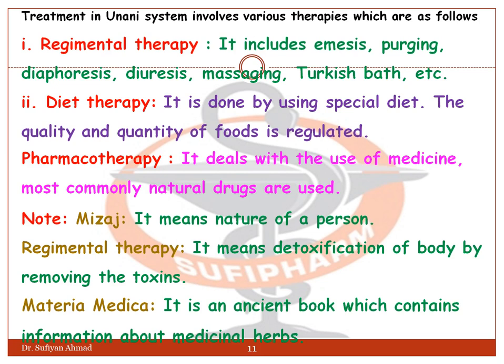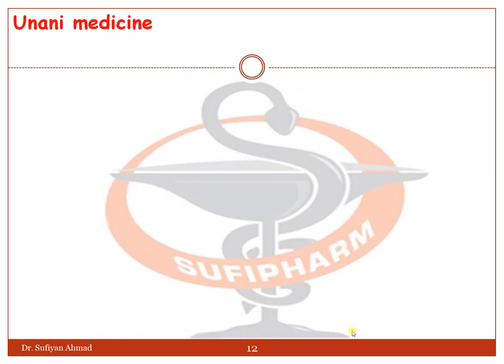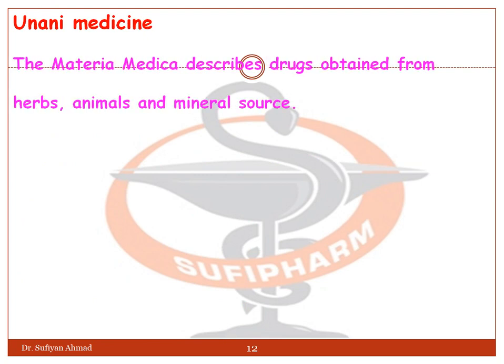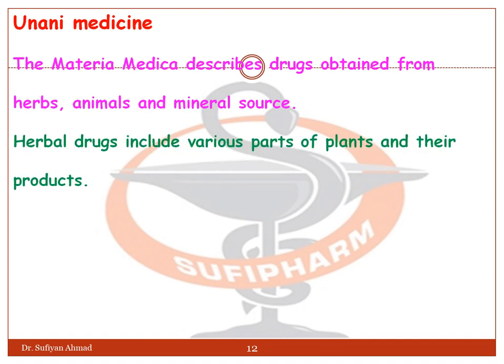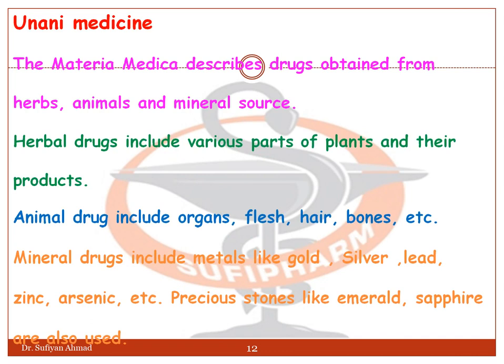Materia Medica is an ancient book containing information about medicinal herbs. The Yunani Materia Medica describes drugs obtained from herbal, animal, and mineral sources. Herbal drugs include various parts of the plant and their products. Animal drugs include organs, flesh, hair, bone, etc. Mineral drugs include metals like gold, silver, lead, zinc, arsenic, etc. Precious stones like emerald and sapphire are also used.